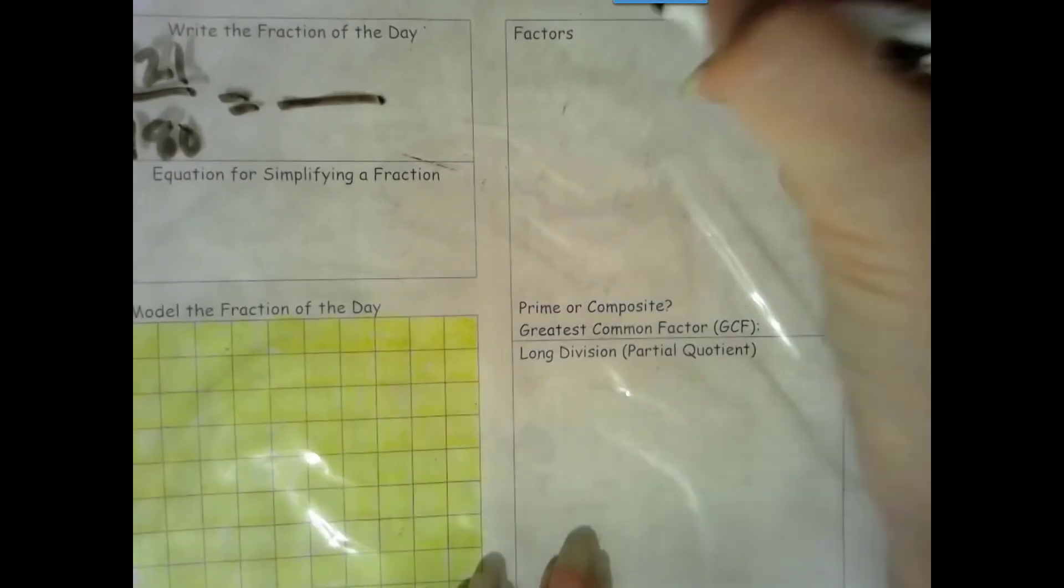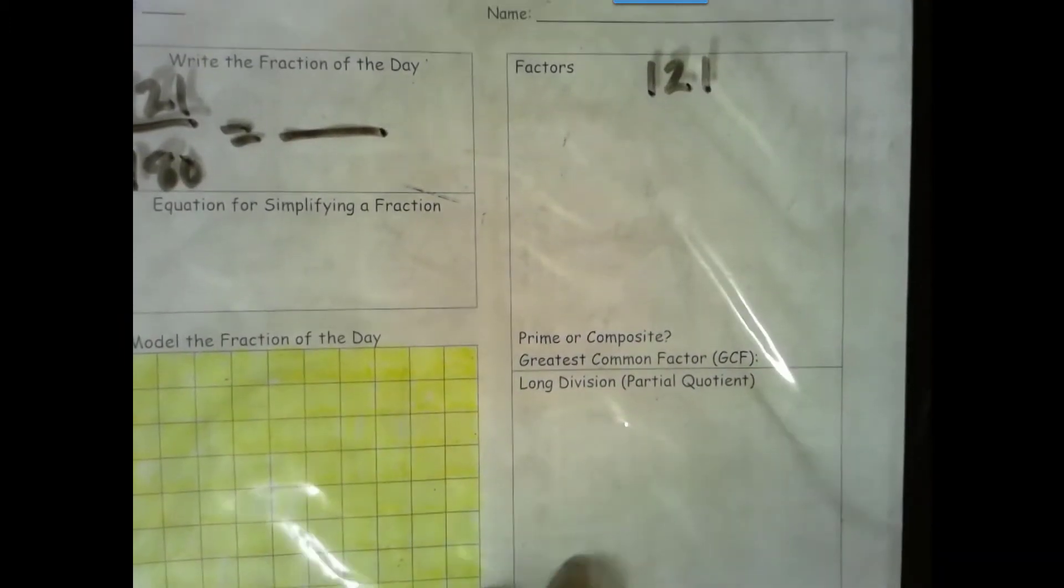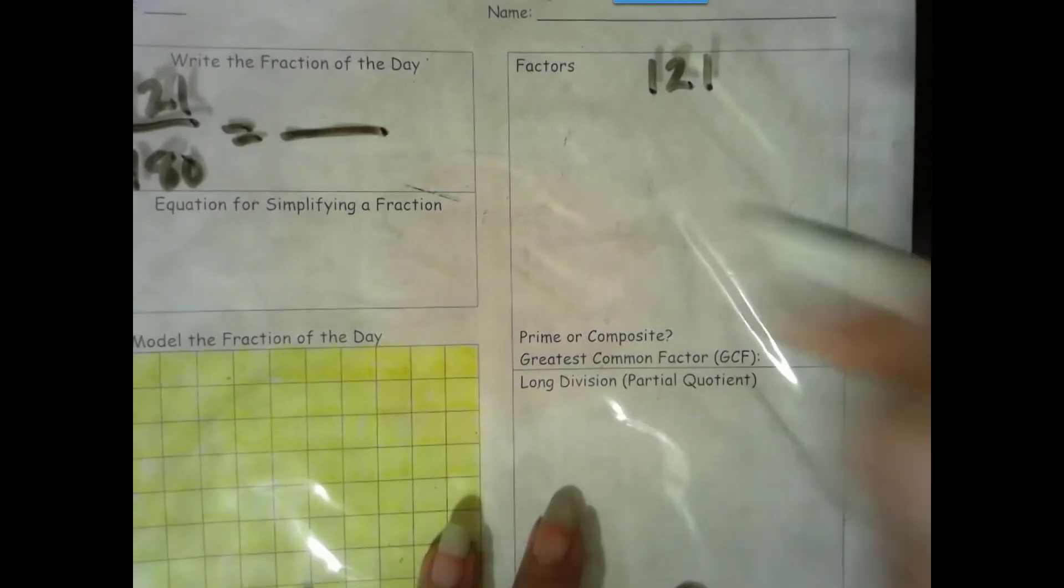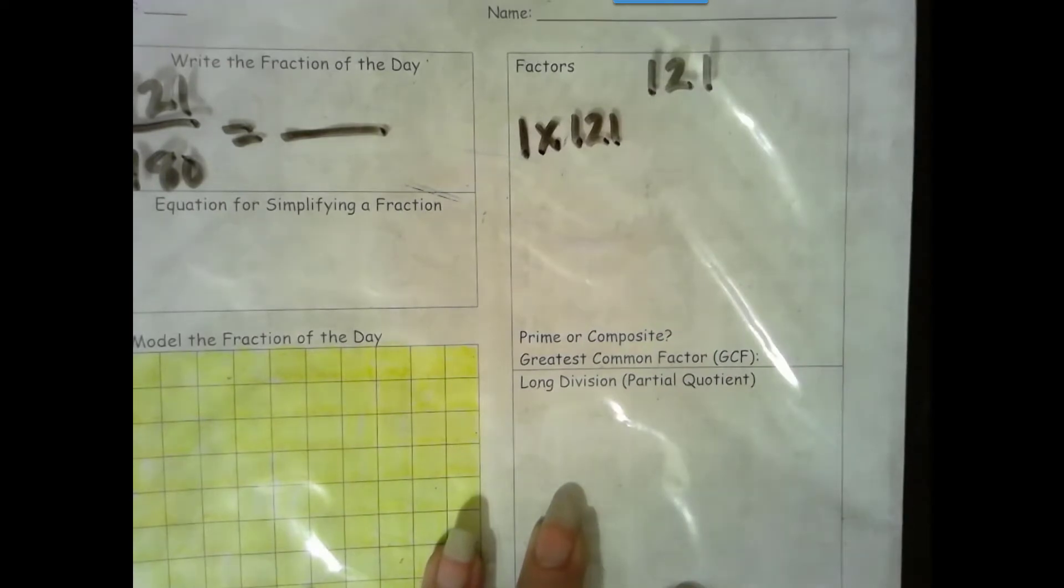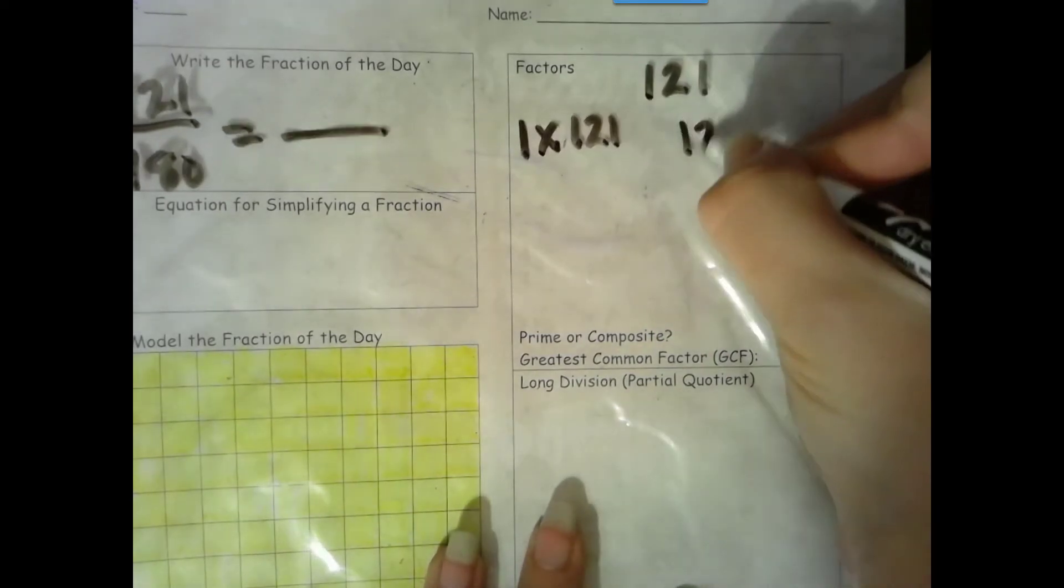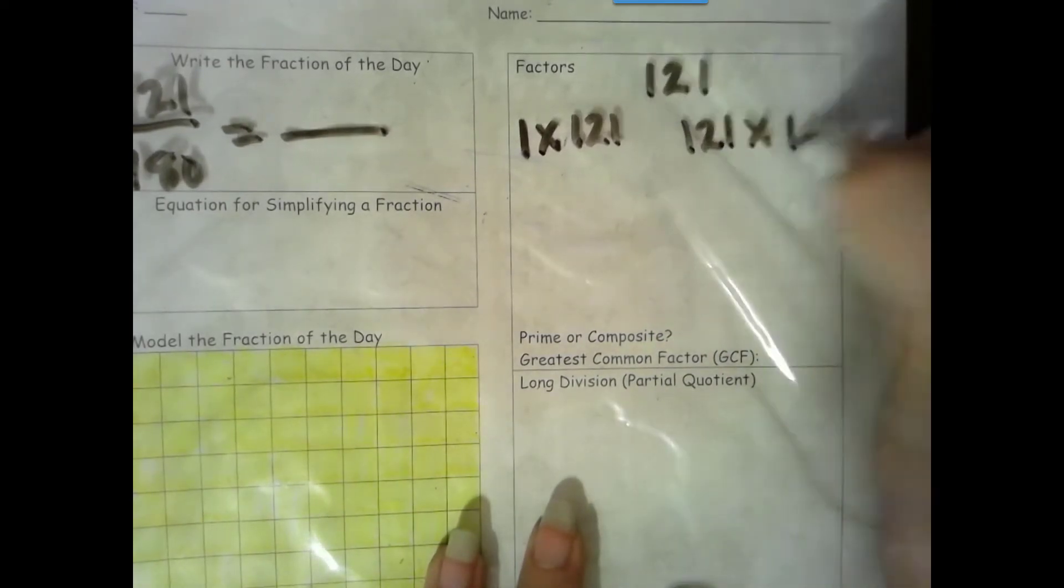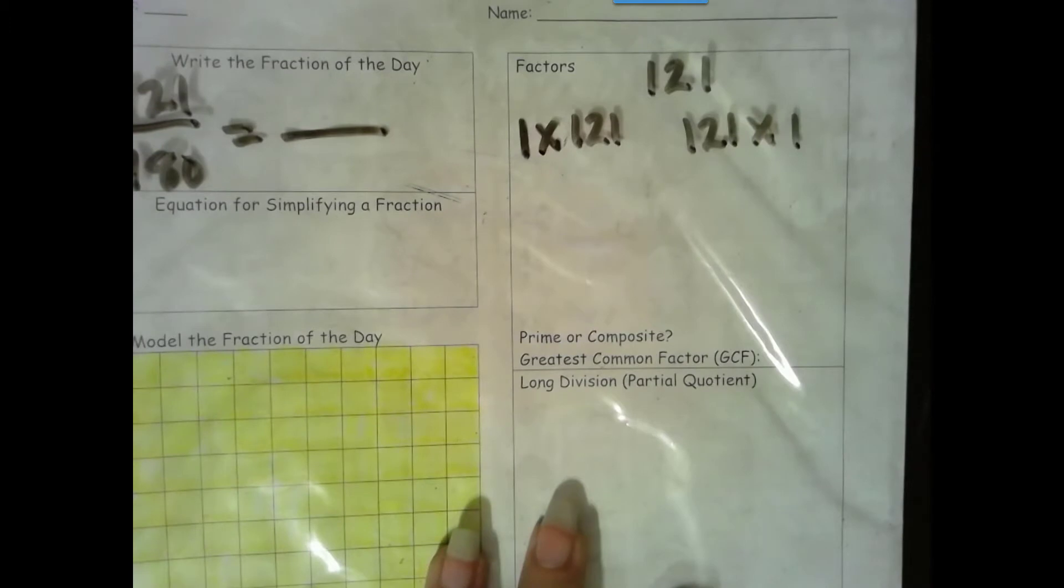Now let's go ahead and find the factors of our numerator, which is 121. Two factors we always know are 1 and the number itself. Using the commutative property of multiplication, I can write it as 121 times 1.